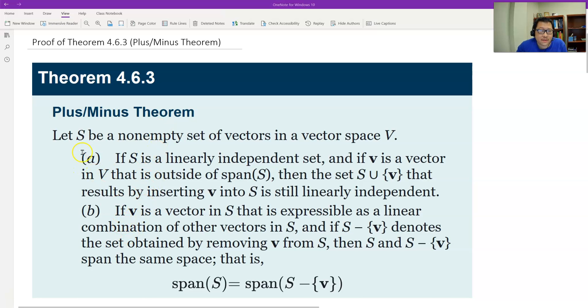We have two parts. The first part A we call plus, and part B we call minus. So A says, if S is a linearly independent set and V is a vector that's outside of the span of S, then we can plus. We can plus V to the original set, and this bigger set after we insert the new vector here is still linearly independent. That's the plus.